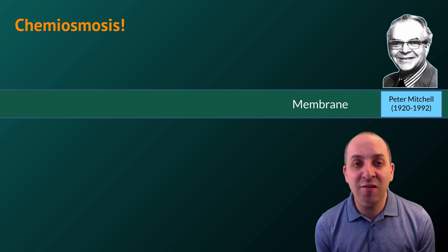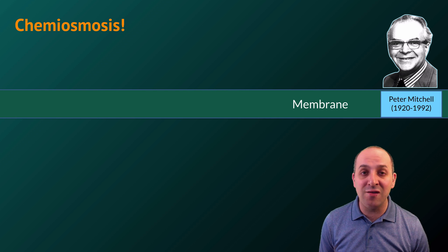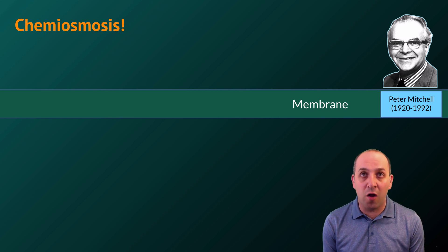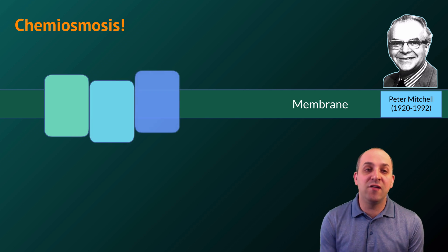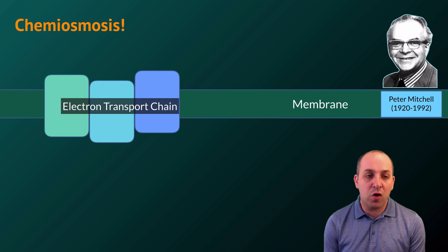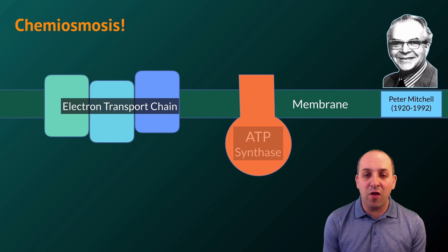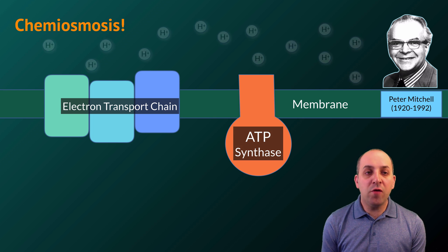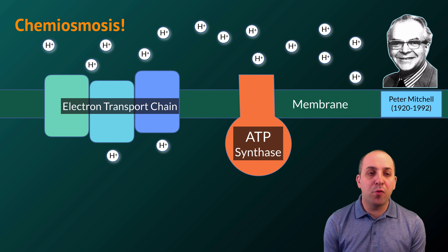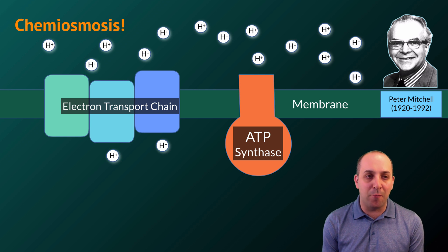The final widely distributed bio-energetic mechanism used by cells is chemiosmosis. Chemiosmosis is a means by which cells use a membrane to separate different regions of cellular space in order to generate a lot of ATP. This requires a series of proteins called an electron transport chain as well as another protein known as ATP synthase. For chemiosmosis to work, a proton gradient must be established across this membrane.